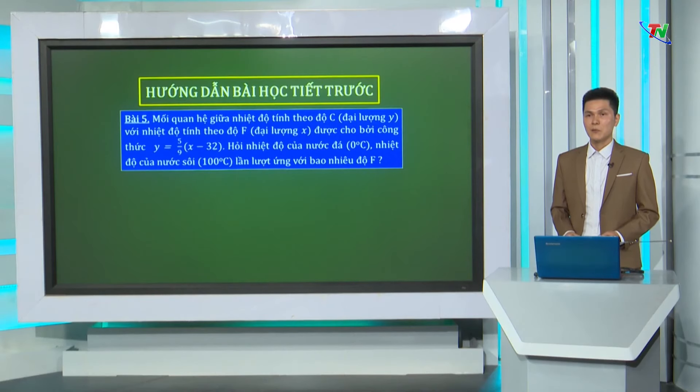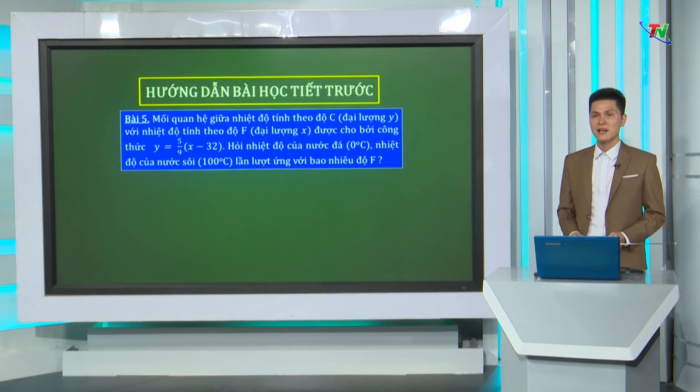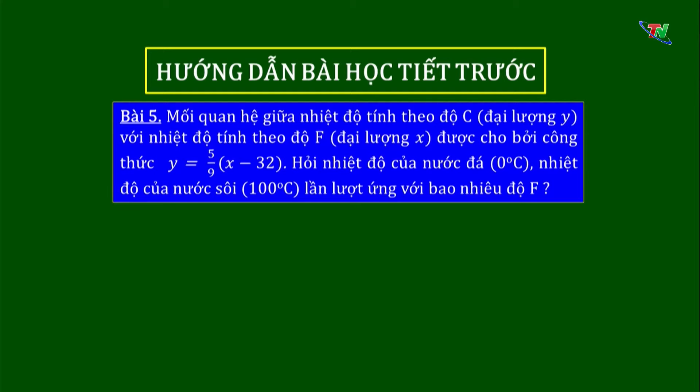Trước khi vào bài học, thầy xin hướng dẫn các em giải đáp 2 bài tập thầy đã giao về nhà. Ở bài tập số 5, chúng ta biết Y bằng 5 phần 9 nhân với (X trừ 32) là hàm số bậc nhất. Biết 2 giá trị của Y là 0°C và 100°C, cần tính xem giá trị X lần lượt tương ứng là bao nhiêu độ F.